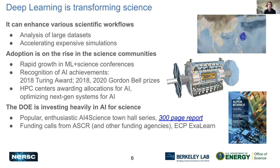As deep learning has become more mature as a field, we're seeing it actually start to be used in science and transform scientific workflows. It can help with analysis of very large, complex datasets that would be otherwise impossible to process manually, and it can accelerate expensive computational simulations. We're seeing rapid growth in machine learning and science conferences, recognition like the 2018 Turing Award and Gordon Bell Prizes in 2018 and 2020, and HPC centers awarding allocations for AI and optimizing next-generation systems like Perlmutter for AI workloads — a sign that DOE is investing heavily in AI for science.